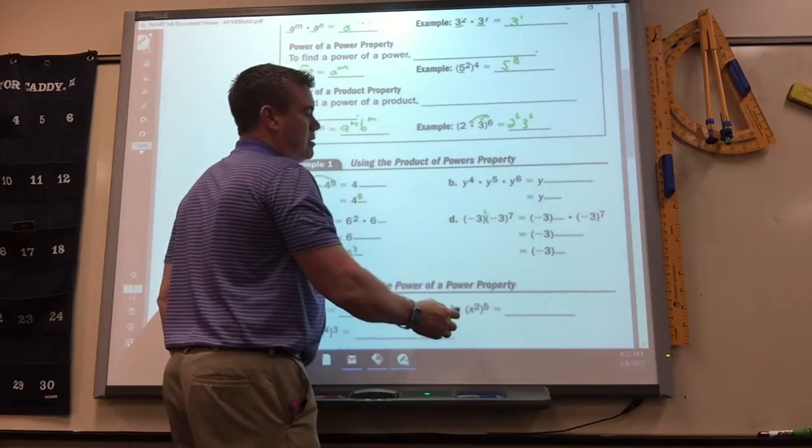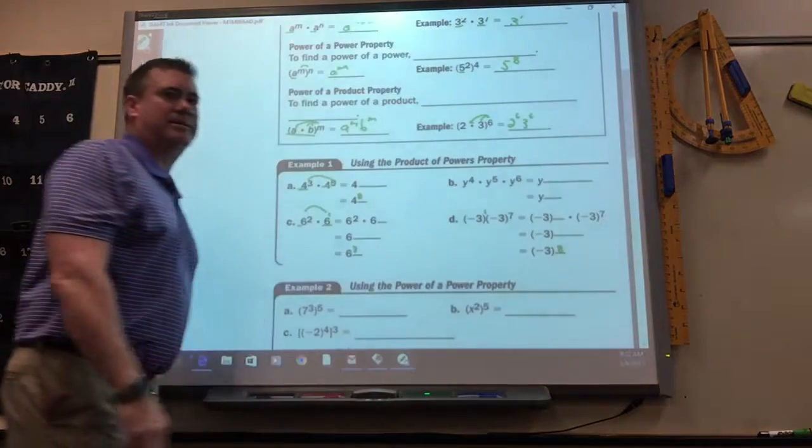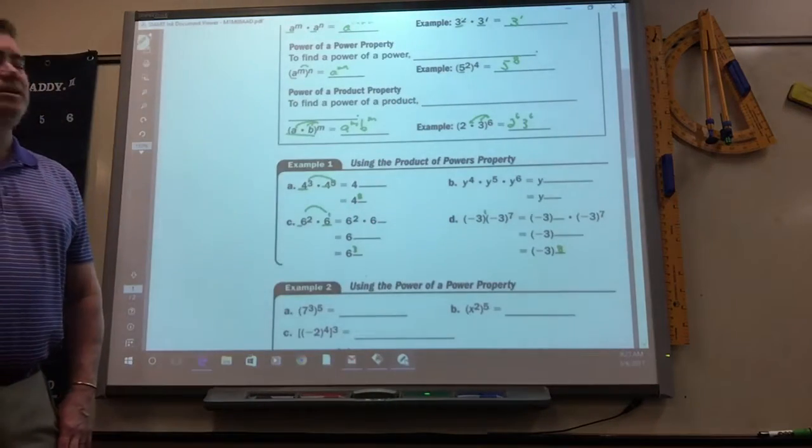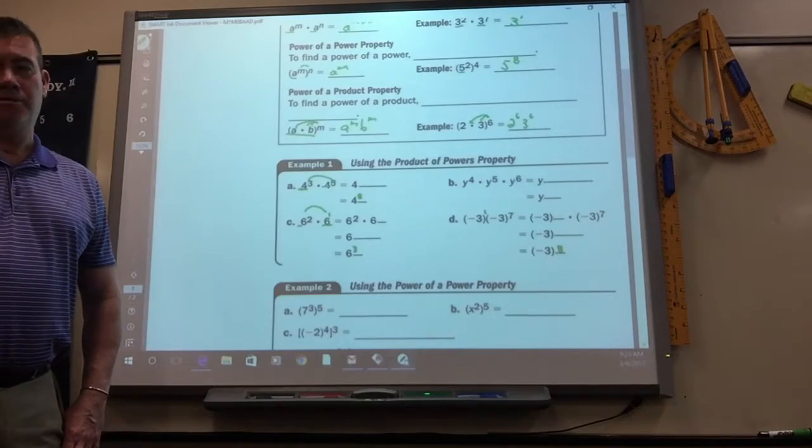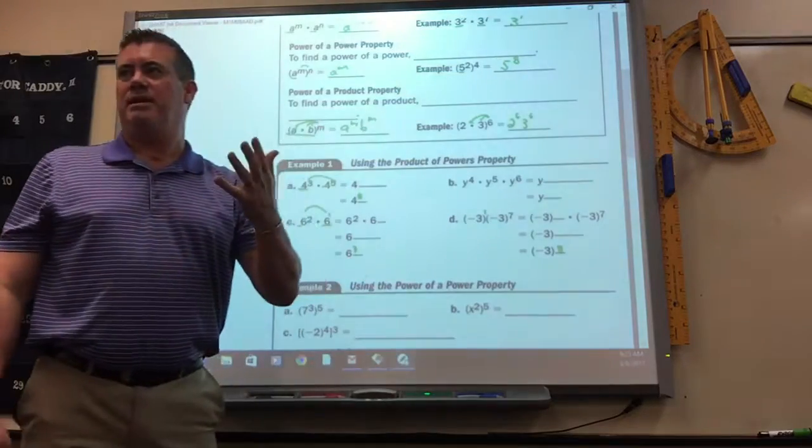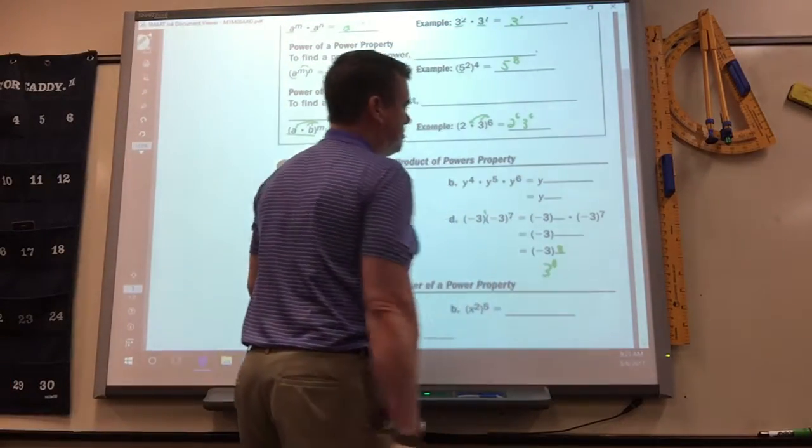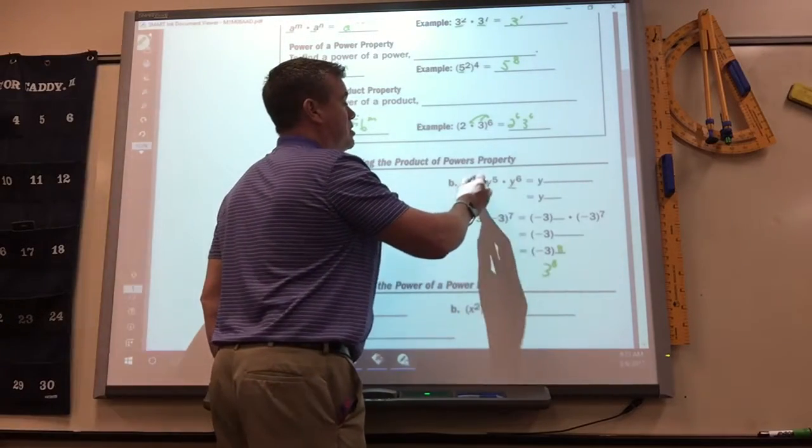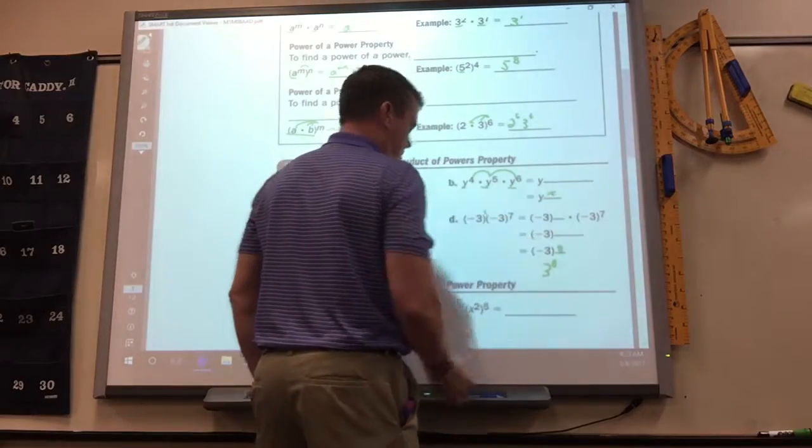That would be a 1, so it'd be negative 3 to the 8th. Which, technically, what would happen to the negative? It would be positive. If you raise a negative to a positive power, if you've got an even amount, they cancel each other out, so you could write it like that. Here there's 3 of them, so you just add all 3. That would be Y to the 15th.